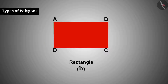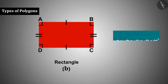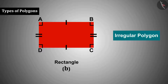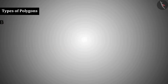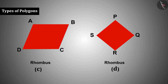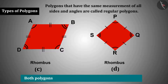Polygon B is a rectangle in which all angles are equal to right angles, but the sides are not equal. Therefore it is an irregular polygon. Some students mistakenly think a polygon becomes regular if all its angles are equal. Polygons C and D are rhombuses — the equal sides lead to the mistake of forgetting that all angles of a rhombus are not equal, which is necessary for a regular polygon.